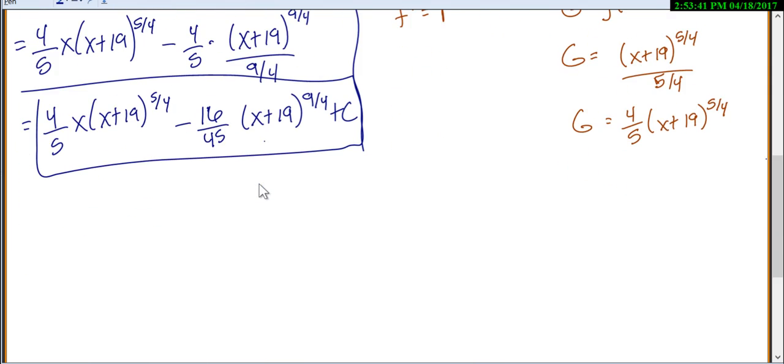Depending on what MyMathLab is feeling like on this problem, you might be able to leave it there or you might need to simplify it a little bit more. One of the things I notice is this (x plus 19) to the 5/4 and (x plus 19) to the 9/4. What if I went through here and factored out an (x plus 19) to the 4/4?